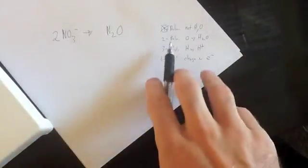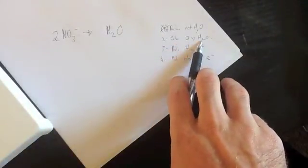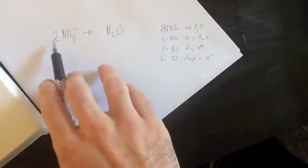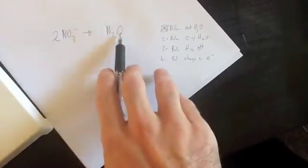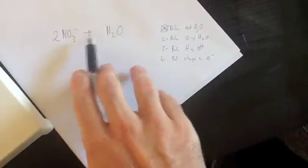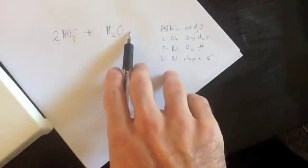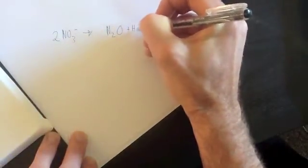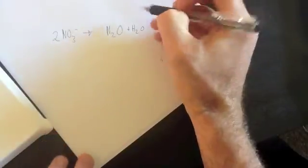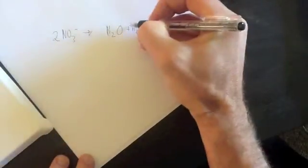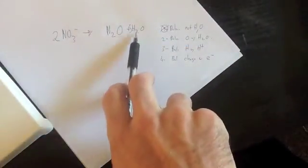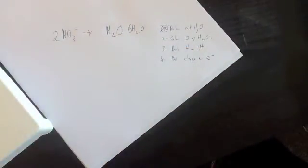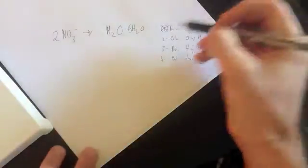The second one is balance oxygens with H2O. Now, where's our oxygens needed? We have six oxygens here, two times three makes six, one here, so therefore we need to put oxygens on this side. We're going to balance them with H2O. How many do I need? I've got six, I've got one here, I need five to make it all six balanced even. So I've got five H2O's on this side. So this step is now done.